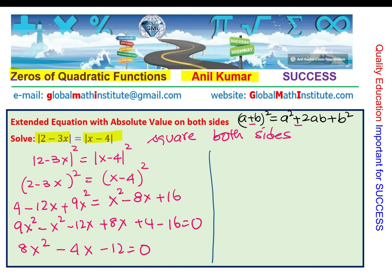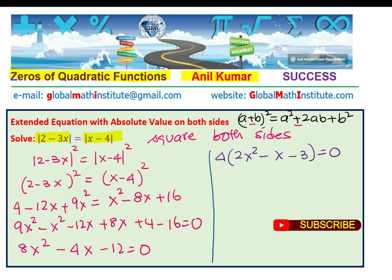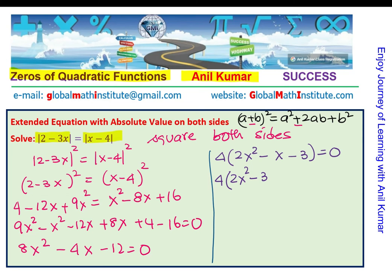How will you do this? Well, factor. We have 8x² - 4x - 12. I could take 4 common so I get 2x² - x - 3 = 0. Now we could do product and sum. 2 times 3 is 6 with a negative sign, and we need -x, so we could split this as 2x² - 3x plus 2x - 3 = 0. Because 3 times 2 is 6, that is the product we want, but the sum is -1.